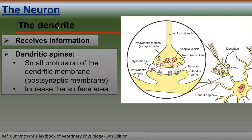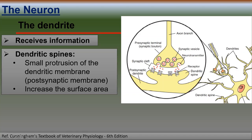The dendrites receive information, and they have structures called dendritic spines. If you zoom in, you can see these dendritic spines provide a large surface area where synapses with other neurons occur, so that neurotransmitters released by the neuron can properly bind with receptors on the postsynaptic membrane.